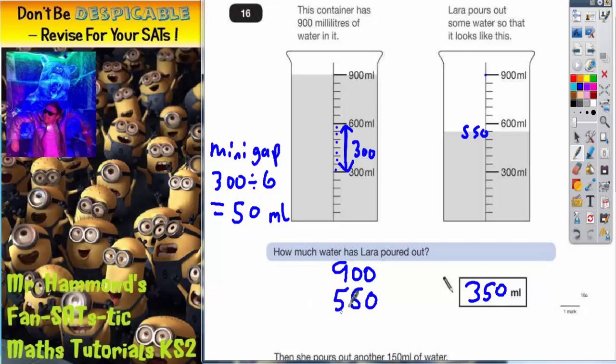If you find the difference between them by subtracting, you will find how much she's poured out. 0 take 0 is 0. 0 take 5 you can't do, so you borrow one. It's 10. 10 take 5 is 5. 8 take 5 is 3. Whichever way you do it you get the answer 350. But you would have to know that each mini gap is worth 50. So that first part is crucial.